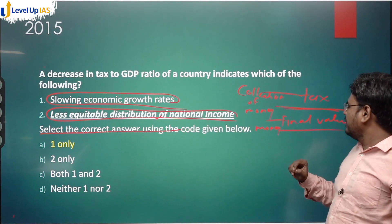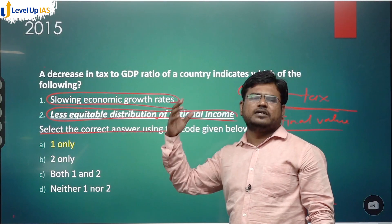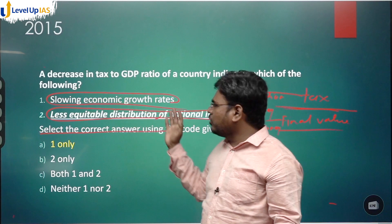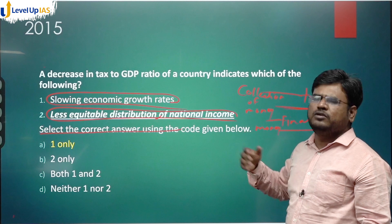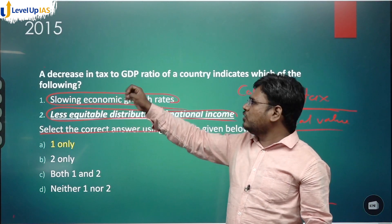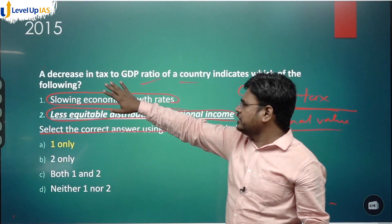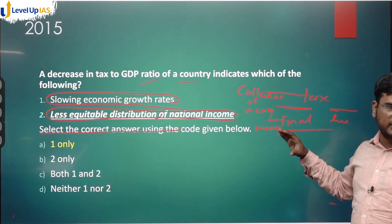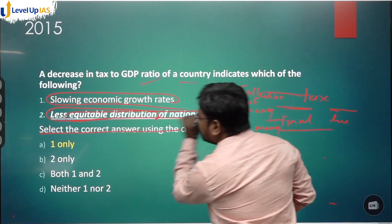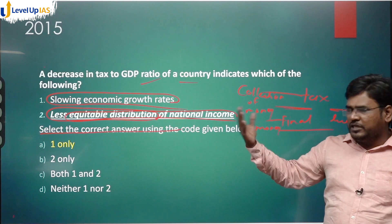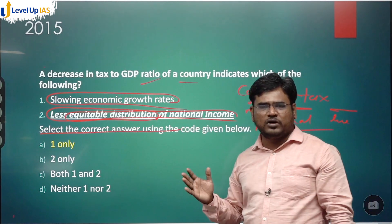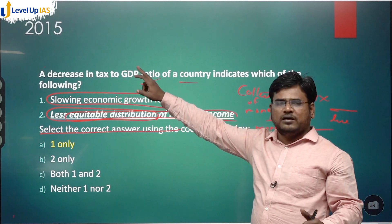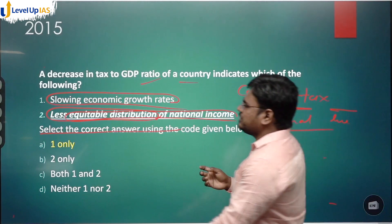Even if you don't have knowledge about whether a decrease in tax-to-GDP ratio leads to slowing of the economy or less equitable distribution, you can still solve it using the quantitative vs. qualitative trick. This is a quantitative statement — it gives quantities of tax collected and GDP, but gives no indication regarding distribution of national income among citizens. So statement two is directly wrong.